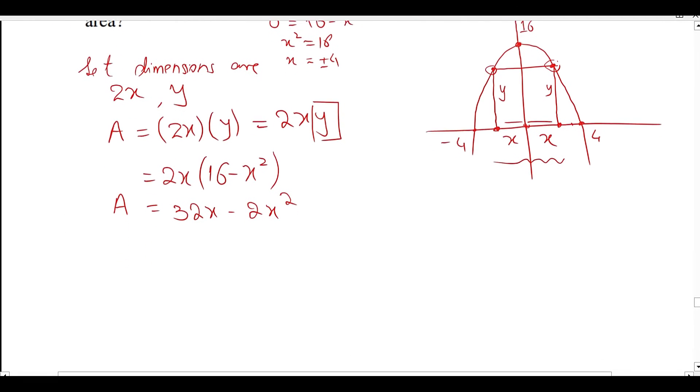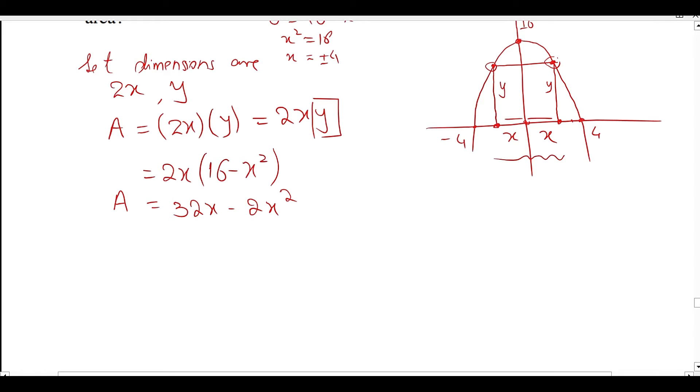Now, what is the maximum and minimum for x? The minimum x is 0. And the maximum x occurs when y = 0, which gives 16 - x² = 0, so x = 4. So the interval is [0, 4].